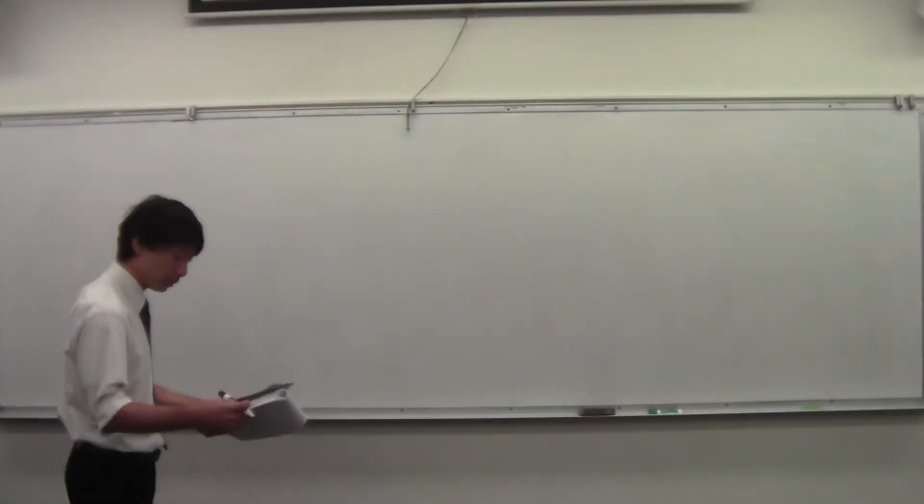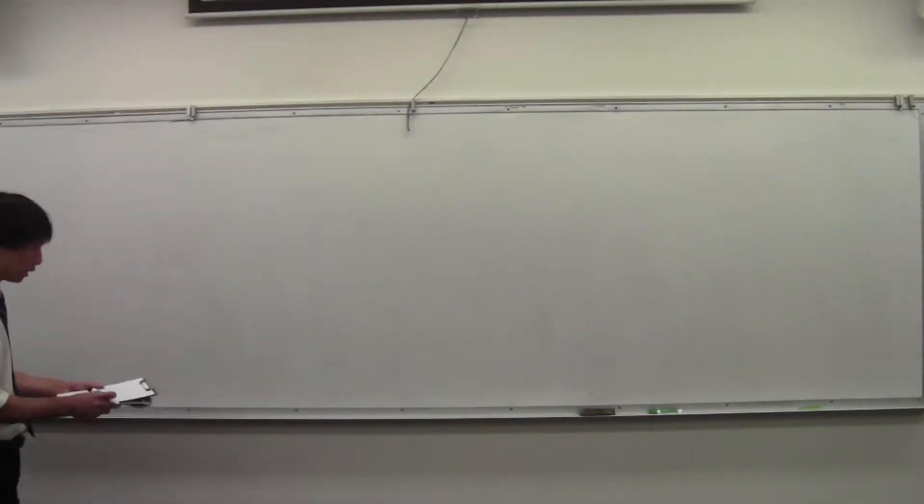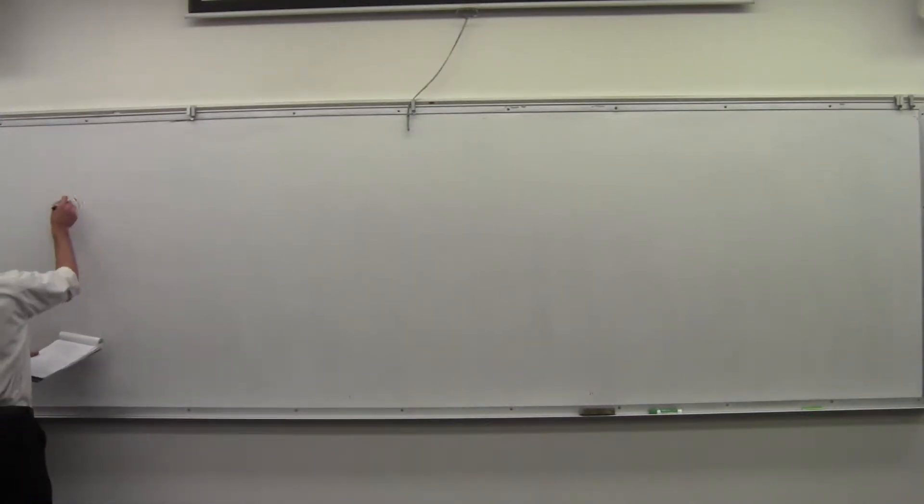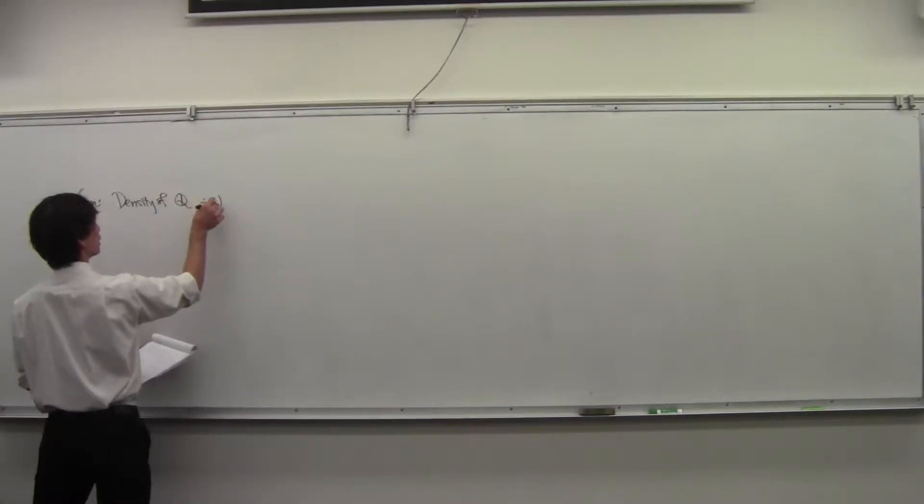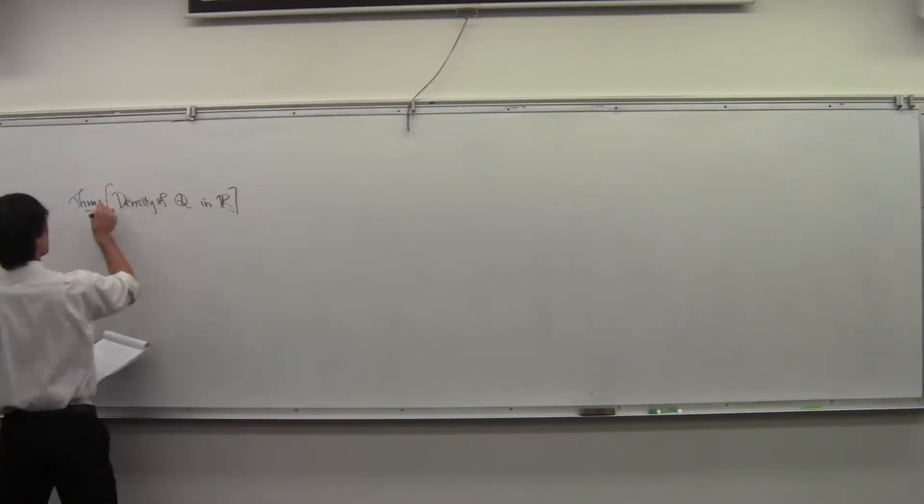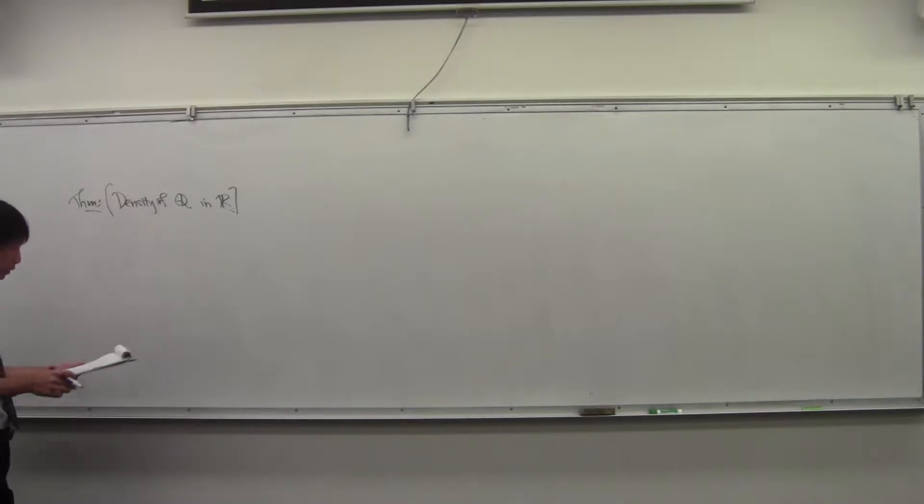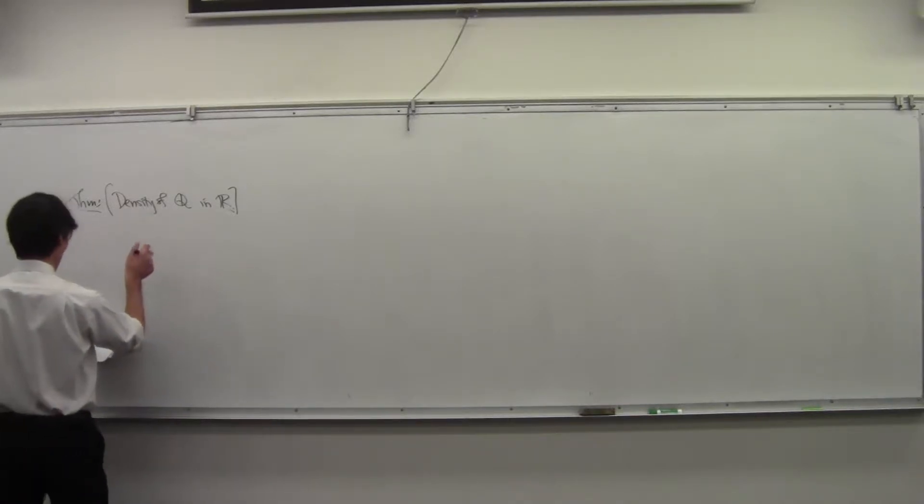Okay, so let's do the last consequence here of the Archimedean property. This is called the density of the rationals in R - the density of Q, the density of the rational numbers in R.